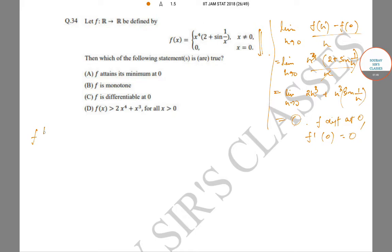At other points it's easy to compute from the formula. If x is not equal to 0, we have 4x^3(2 + sin(1/x)) keeping it constant.